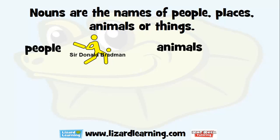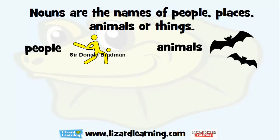Animals. An example of an animal — a bat. So 'bat' would be an animal noun.